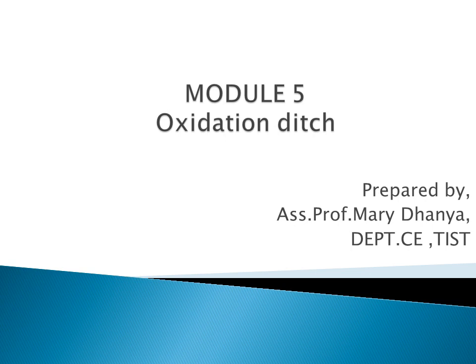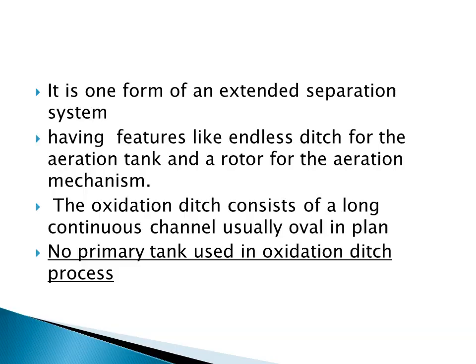Now, let us go through what is an oxidation ditch. An oxidation ditch is nothing but a long continuous channel, and the length of the channel varies from 150 meters to around 1000 meters. This oxidation ditch is oval in plan and it is one form of an extended aeration system. It is an endless ditch, and the oxidation ditch itself can be used as an aeration tank by providing a rotor.